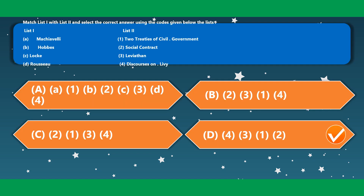Match List 1 with List 2 and select the correct answer using the codes given below. In List 1, all thinkers' names are given; you have to match thinkers with their famous works. Machiavelli is related to Discourses on Livy. Hobbes' famous work is Leviathan. Locke — Two Treatises of Civil Government. Rousseau — Social Contract. So the correct option is option D.